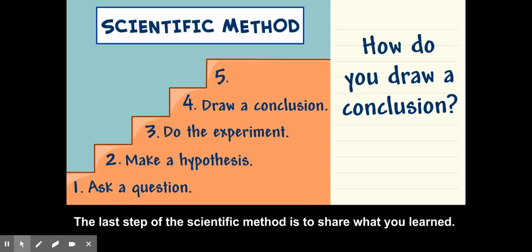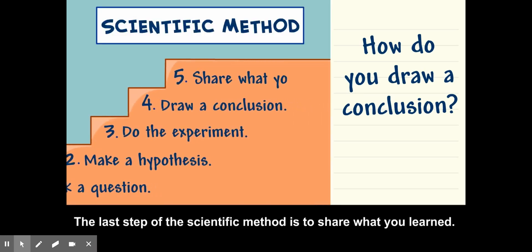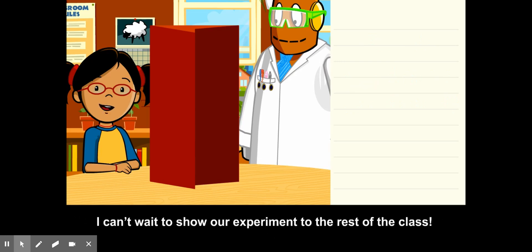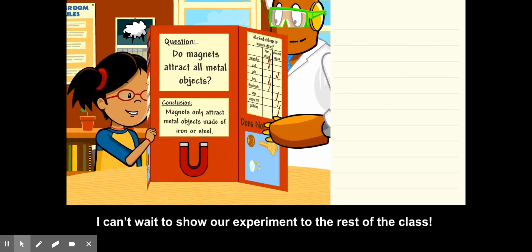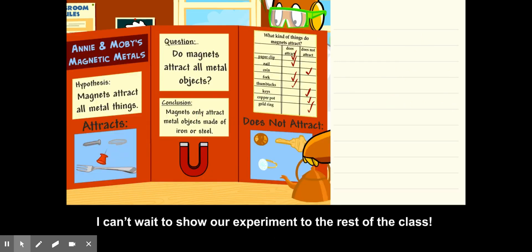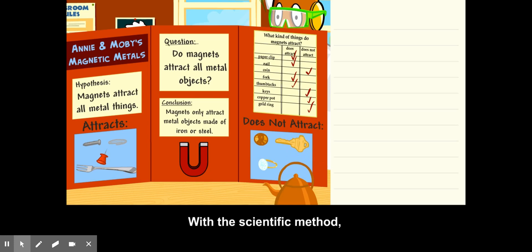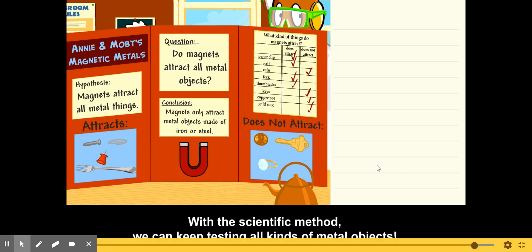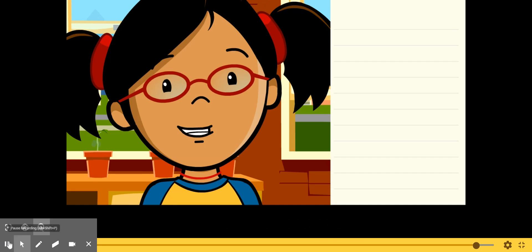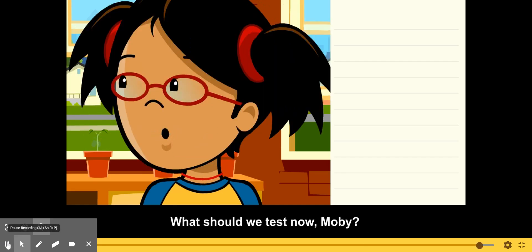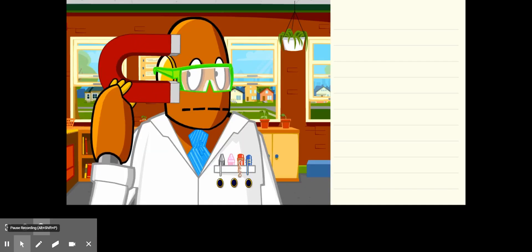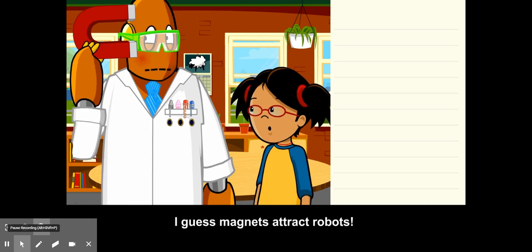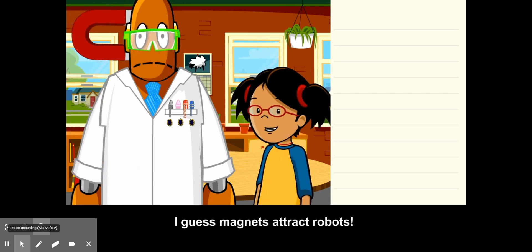The last step of the scientific method is to share what you learned. I can't wait to show our experiment to the rest of the class. With the scientific method, we can keep testing all kinds of metal objects. I guess magnets attract robots too.